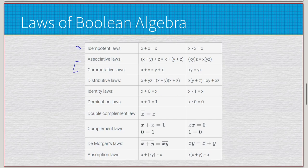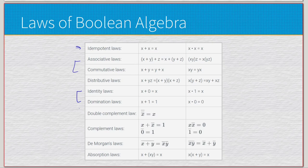For identity laws, x plus zero is x, and x times one is x. If we add nothing to something it doesn't change the value; if we multiply anything by one it doesn't change. Conversely, domination laws say x plus one is guaranteed to be one — anything plus one in Boolean algebra is one — whereas anything times zero is guaranteed to be zero.